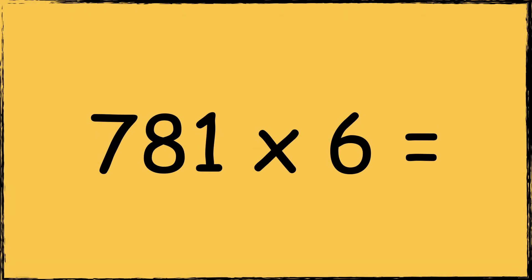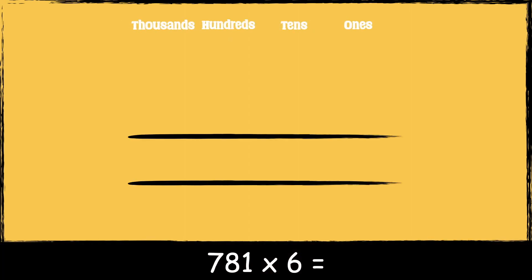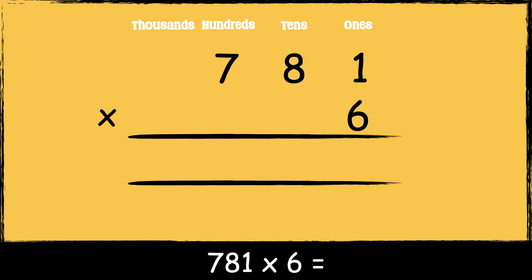The next calculation is seven hundred and eighty-one multiplied by six. First we make sure the numbers are lined up accurately. The number 781 has one one, eight tens, and seven hundreds. The number six has six ones. Now that we're set up, we're ready to multiply. First we multiply six by one: six times one is six.